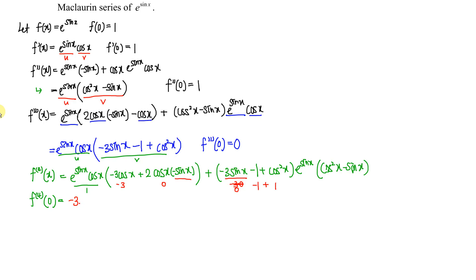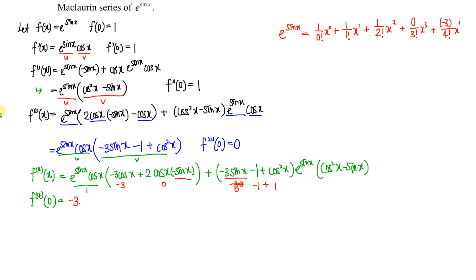Now we can form the Maclaurin series. e^(sin x) equals f(0) over 0! times x^0, plus f'(0) over 1! times x^1, plus f''(0) over 2! times x^2, plus the third derivative term 0 over 3! times x^3, plus the fourth derivative term negative 3 over 4! times x^4, and so on.